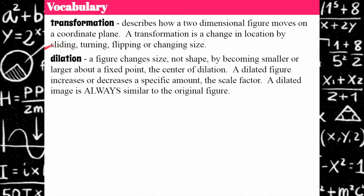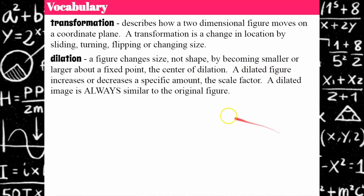Today we're going to discuss the transformation dilation, which is a figure that changes size but not shape, becoming smaller or larger about a fixed point called the center of dilation. A dilated figure increases or decreases by a specific amount called the scale factor. A dilated image is always similar to the original figure. Unlike the previous three transformations which resulted in congruent images, a dilation results in a similar image by a scale factor.